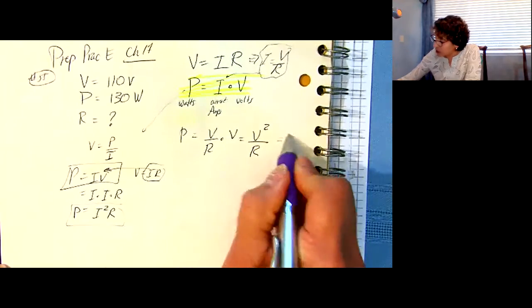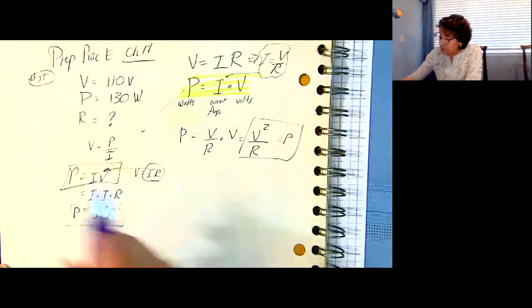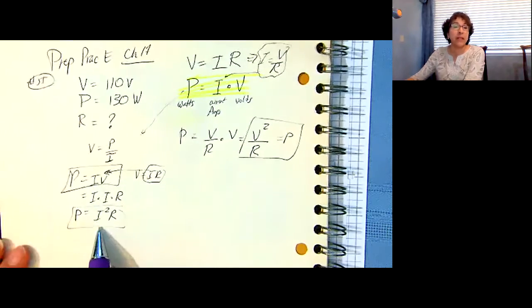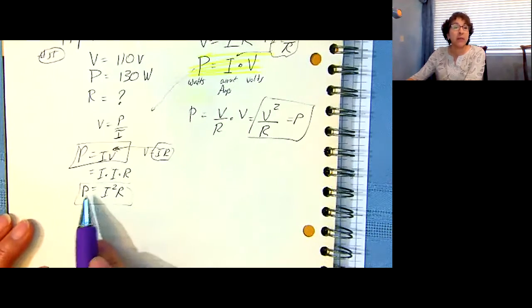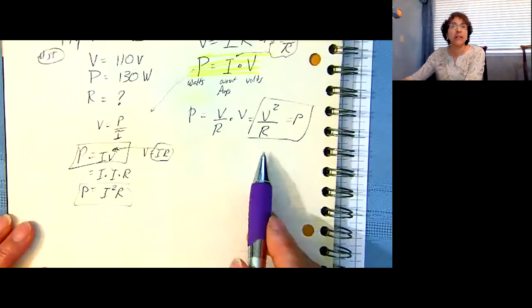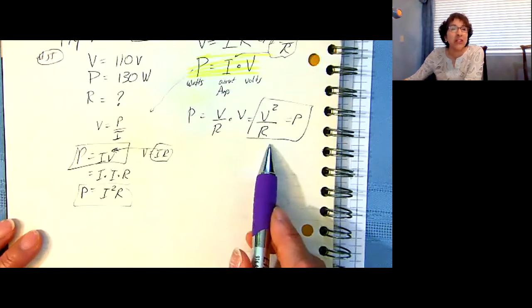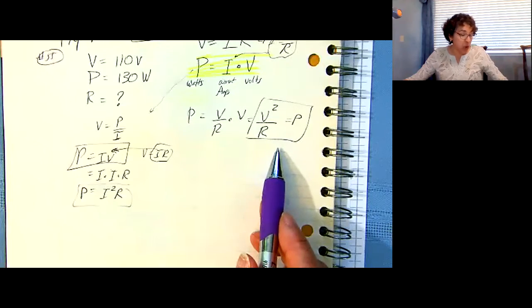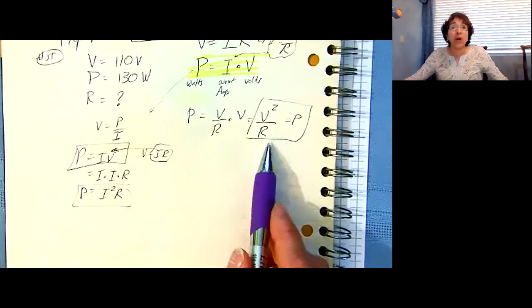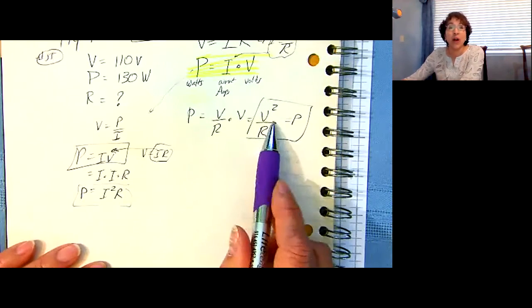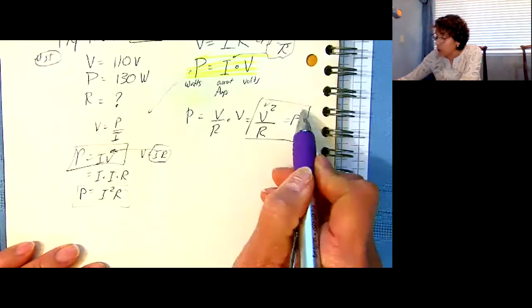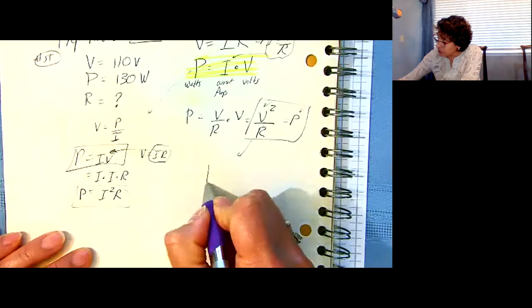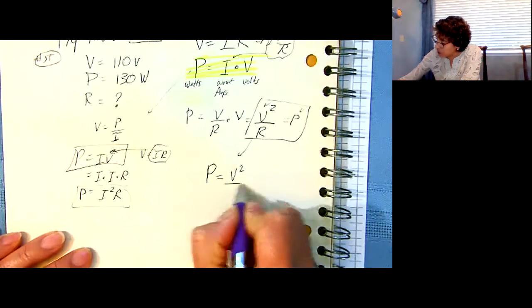So you have all these choices now, and we have the power, the power and the voltage, we want to know what the resistance is. So let's look at this one. We've got P equals V squared over R. So basically, you're going to be looking for which one is it that's going to help you figure out what you want. We know the V, and we know the P, so we can solve for R.